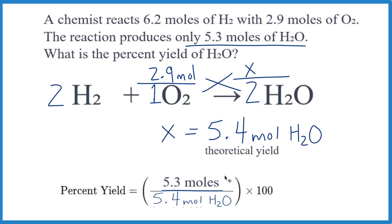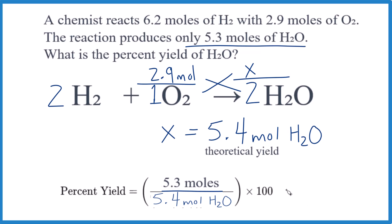You do the division. We get 98.1. Let's call it 98.1. And that's our percent yield.